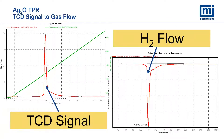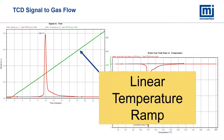Here is an example of the temperature program reduction of silver oxide. On the left figure, the red curve is the TCD signal plotted against time. Once the calibration file is applied, the system automatically converts the TCD signal to the gas flow rate of the active gas — in this case, hydrogen. Overlaid with the signal plot is a green curve representing the sample temperature, plotted against the secondary y-axis. The linear ramp rate of the temperature is well maintained throughout the temperature program reduction.